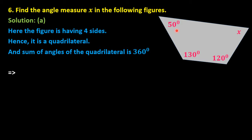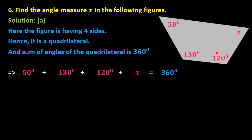We add the four angles of the quadrilateral and set them equal to 360 degrees. The first angle is 50 degrees, plus the second angle 130 degrees, plus the third angle 120 degrees, plus the fourth angle x equals 360 degrees. Adding the three known angles on the left-hand side gives 300 degrees, so 300 plus x equals 360 degrees.